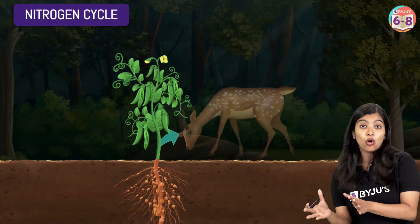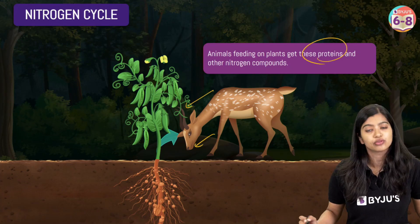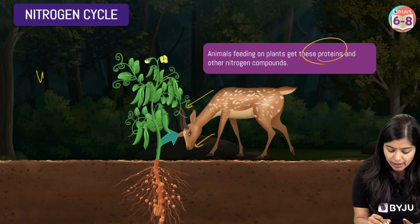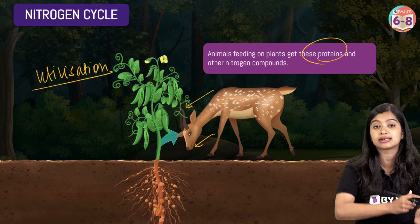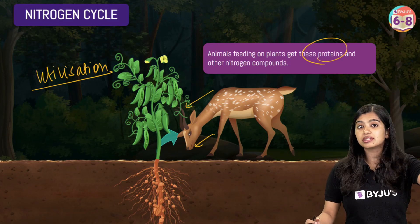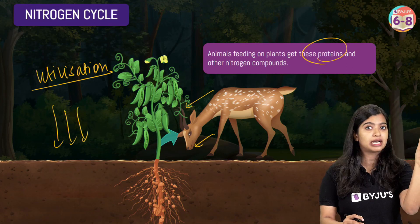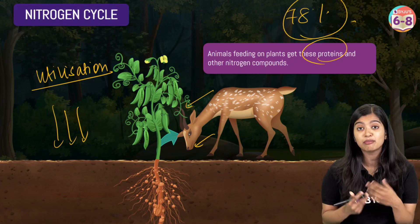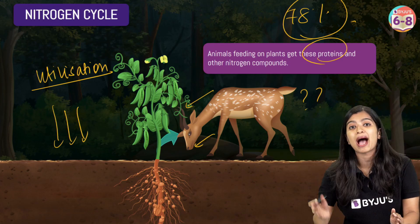Eventually, other animals that are dependent on plants for food also get their source of nitrogen. But so far we've only been talking about how gaseous nitrogen is converted and utilized — which would mean all this gaseous nitrogen is getting used up. So how do we say that the 78% level in the atmosphere is being maintained?